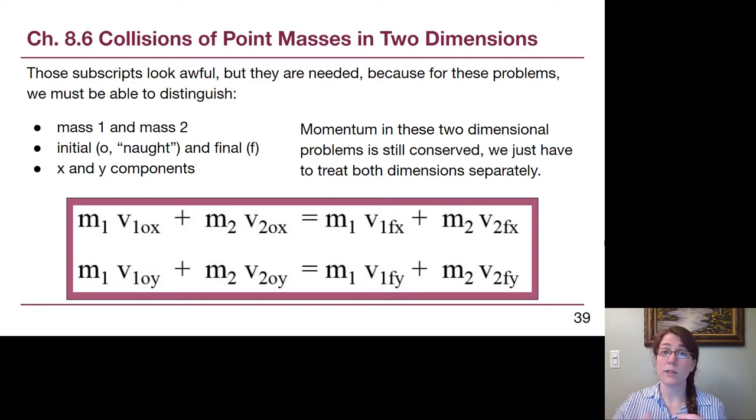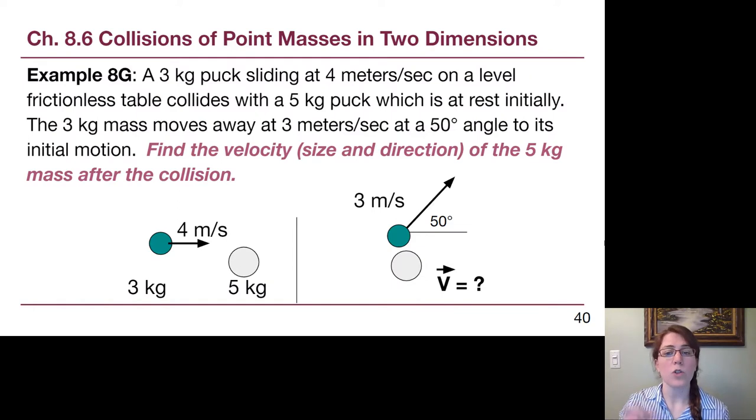So we will see this example as a fully worked solution. This one starts out trying to be as kind of simple a starting point for us as possible. At the beginning we have something moving just sideways so it only has an x component of the velocity, and then we have something that is at rest so lots of things that we'll be able to set to zero.